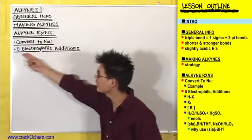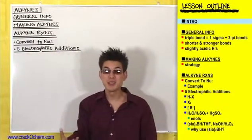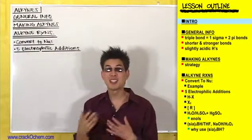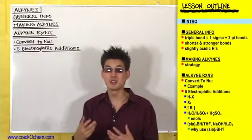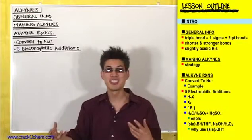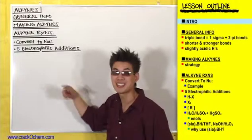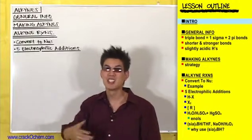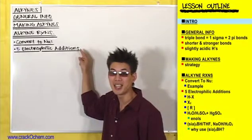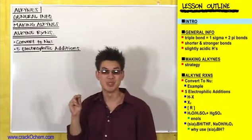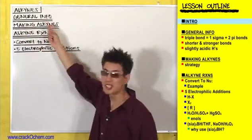These SN2 reactions are very cool because they allow us to make carbon-carbon bonds for the very first time, and anytime you can make carbon-carbon bonds in chemistry, this is a huge deal. The second type of reaction that alkynes undergo are called electrophilic additions. Hopefully this sounds familiar — if you remember your alkene chemistry, alkenes underwent electrophilic additions. Alkynes have five of these electrophilic additions in common with alkenes, so if you remember your alkene chemistry, this should be a piece of cake with just a few slight tweaks.